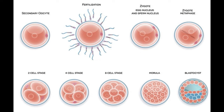During this two-week period, the zygote grows rapidly through cell division — one goes into two, two into four, four into eight, and so on.